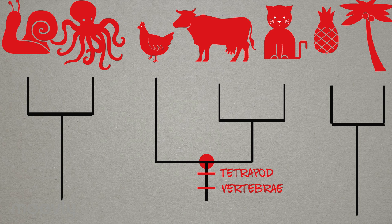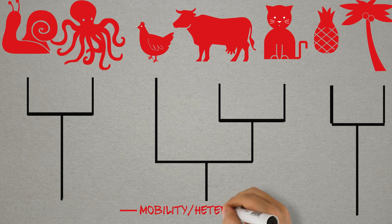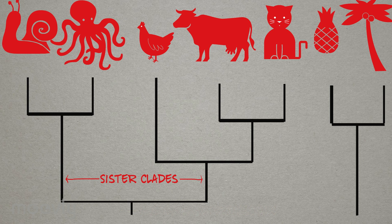We now have three clades, but are there any other connections we can make? The mollusk clade and the chicken-cow-cat clade are both animals, meaning they have shared traits such as mobility, a heterotrophic lifestyle, and other cellular traits. We can draw a clade connecting the two clades, noting that the organisms of each respective clade are equally related to one another. For example, the octopus is equally related to the chicken, cow, and the cat.